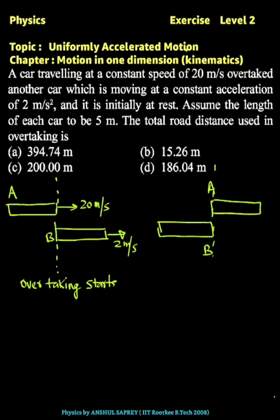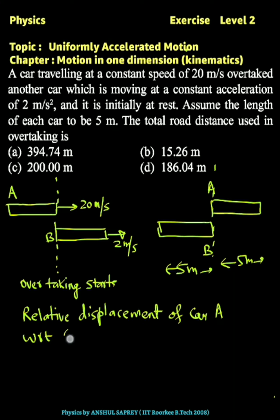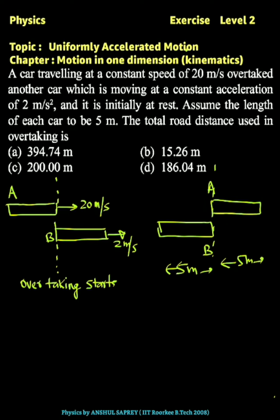The length of each car is 5 meters. The relative displacement of car A with respect to car B equals the length of both cars combined: L plus L, which equals 5 plus 5, equal to 10 meters. The total road distance used in overtaking equals L plus the displacement by car A.